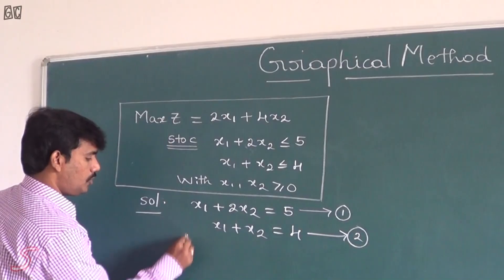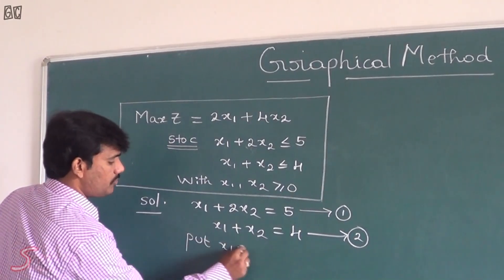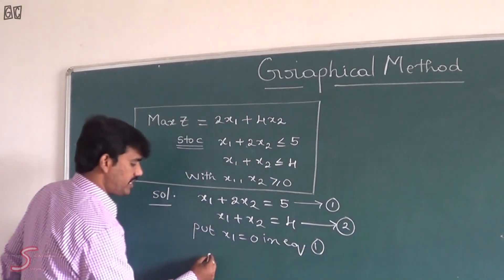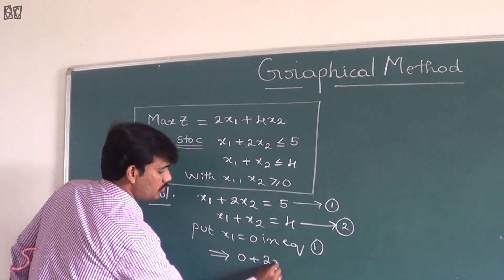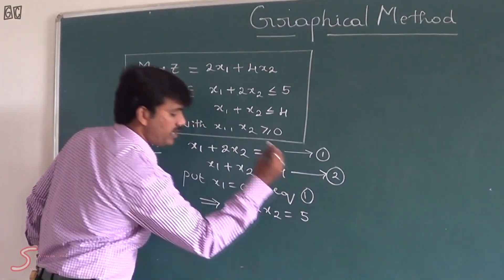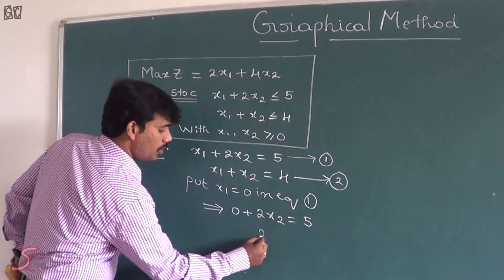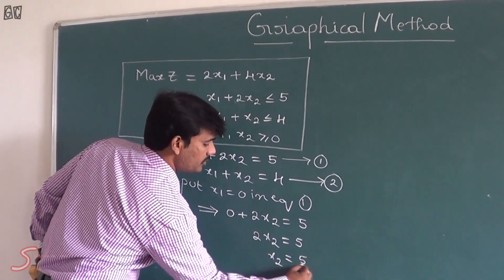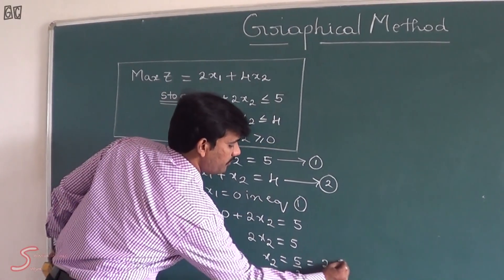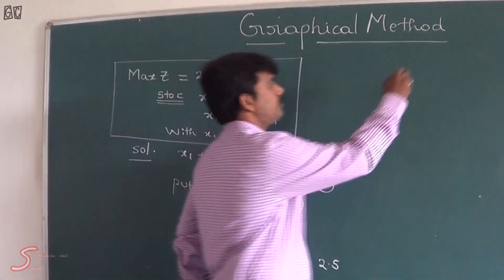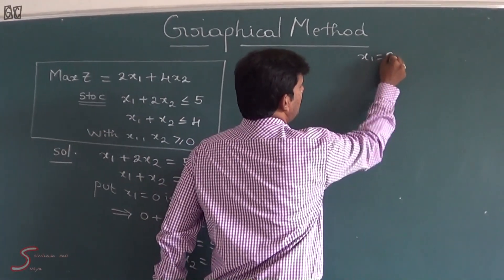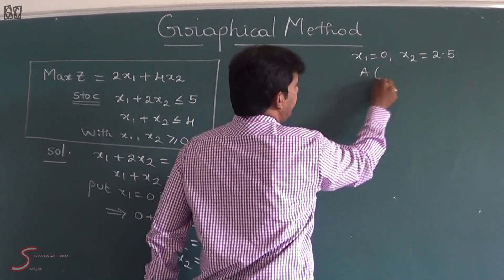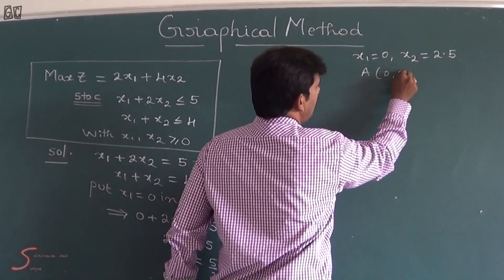Now we have to solve this. I am going to put x1 equal to 0 in Equation 1. If I put x1 equal to 0, that is 0 plus 2x2 equal to 5, so 2x2 equal to 5, that is x2 equal to 5 by 2, that is equal to 2.5. So we got a point A: x1 equal to 0, x2 equal to 2.5 — that is the point (0, 2.5).